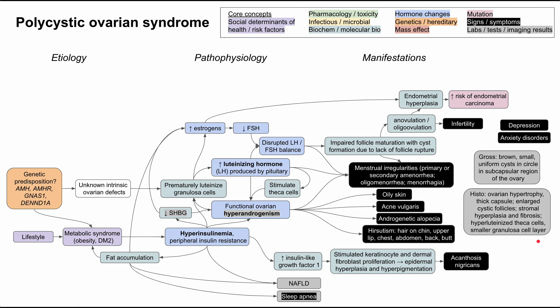This was just a quick overview of PCOS. Unfortunately, this mechanism of disease flowchart isn't perfectly clear because we don't very well understand the exact pathophysiology of the disease, and it's very likely that it's some combination of the things discussed here. We have yet to elucidate the exact pathophysiology as well as the exact predisposing etiologies. I hope this was helpful, and thank you for listening.